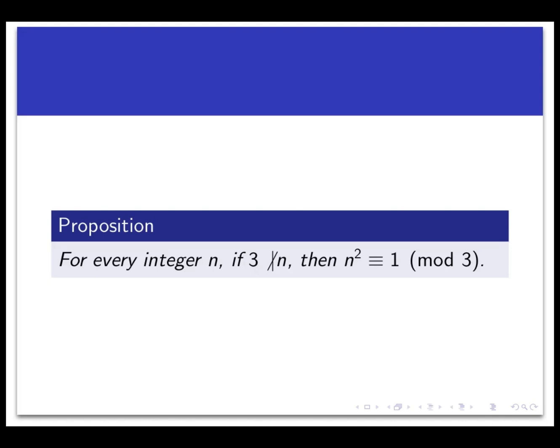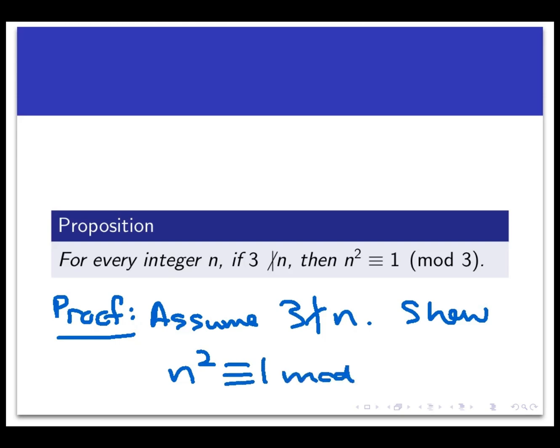So let's look at the following example to see why. We're going to prove the proposition that says for every integer n, if 3 does not divide n, then n² is congruent to 1 mod 3. So let's try this with a direct proof. So we would start a direct proof by assuming that n is an integer such that 3 does not divide n. And we want to prove that n² is congruent to 1 mod 3. So what do you do with the assumption that 3 doesn't divide n? What would be an initial forward step that you would do in the proof after making the assumption?